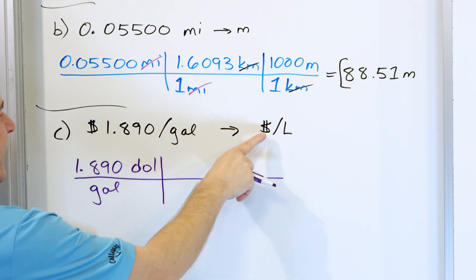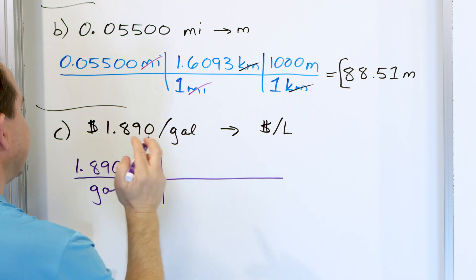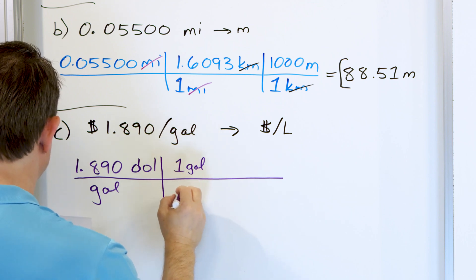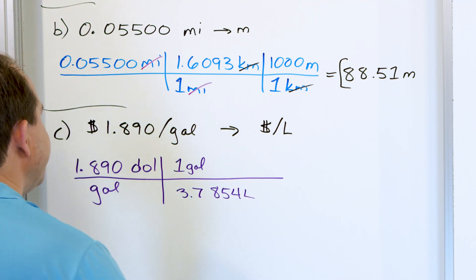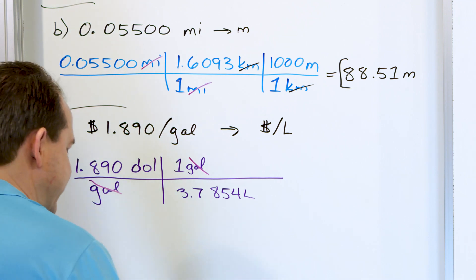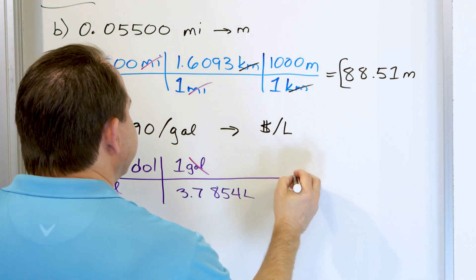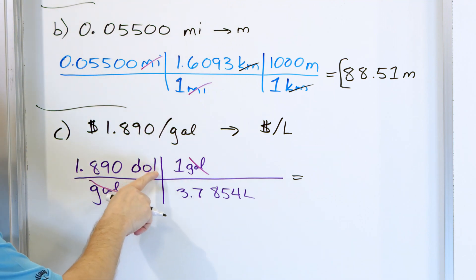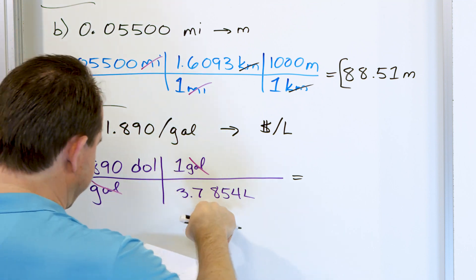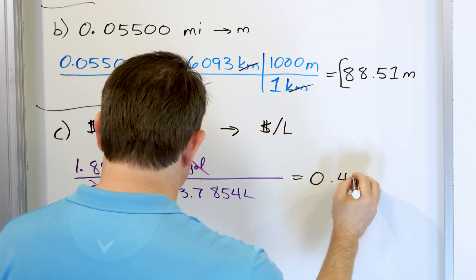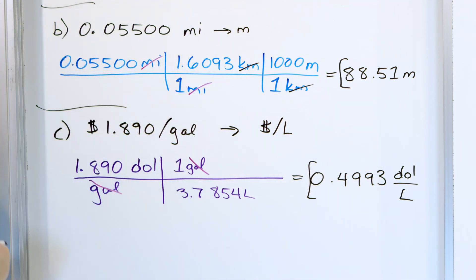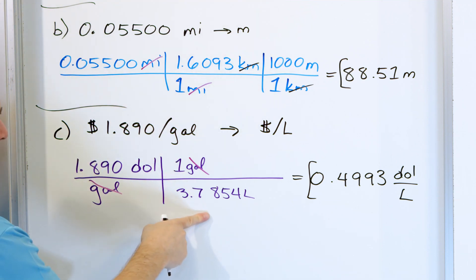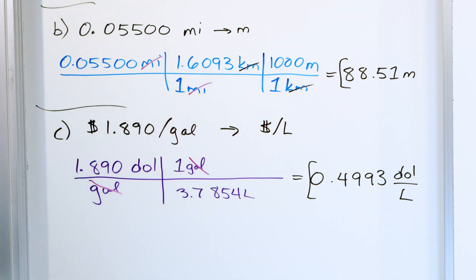I don't want to touch the dollars — that stays the same — but I need to turn gallons into liters. I find that one gallon equals 3.7854 liters and arrange it so that gallons cancels with gallons. Continuing the calculation gives dollars on top and liters on the bottom, which is exactly what I want. So 1.890 divided by 3.7854 gives 0.4993 dollars per liter. You arrange the units to get what you want — it's absolutely bulletproof.